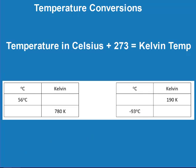To convert between Celsius and Kelvin, you add 273 to the Celsius temperature. If you were going from Kelvin to Celsius, you would subtract 273. So for this first problem, I'm given Celsius and trying to get to Kelvin — adding 273 gives you 329 Kelvin. Notice there's no degree sign. When going from Kelvin to Celsius, I subtract 273, giving 507 degrees Celsius. Pause the video and do the next two on your own. Subtracting 273 gives negative 83, and adding 273 to negative 93 gives 180 Kelvin. Celsius can be positive or negative; Kelvin is always positive.